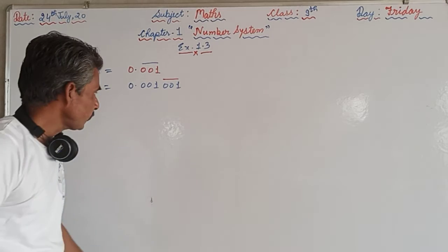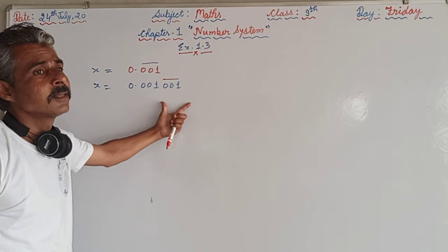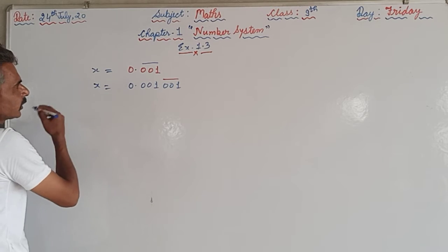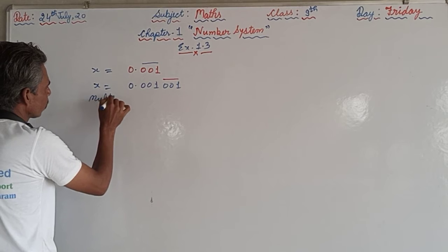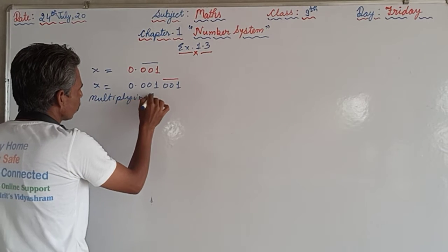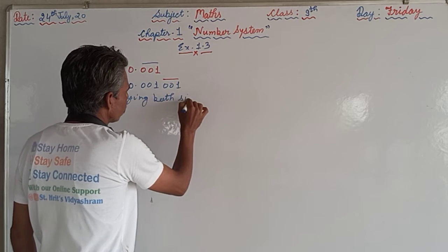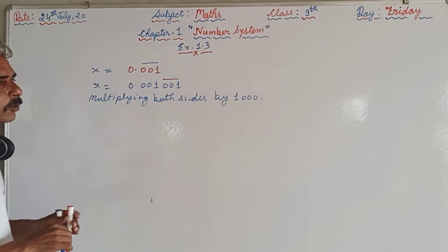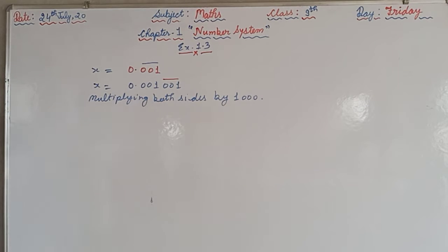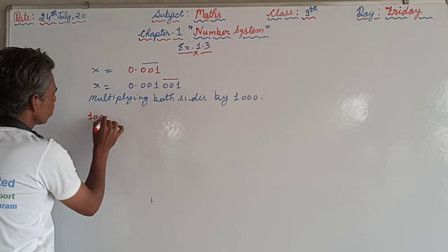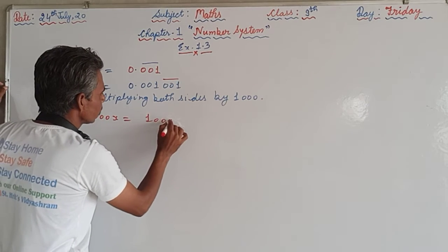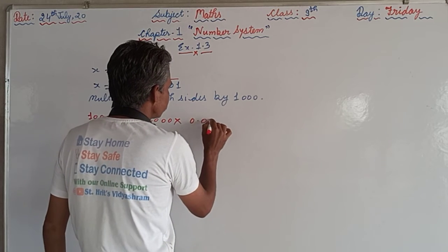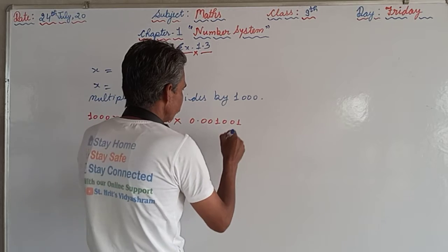Now how many digits are there under the bar sign? That is 3. So we will multiply by 1000, multiplying both sides by 1000. From where 1000 came? Three digits are there in the repeating block, so we should have three zeros by which we have to multiply, means 1000.